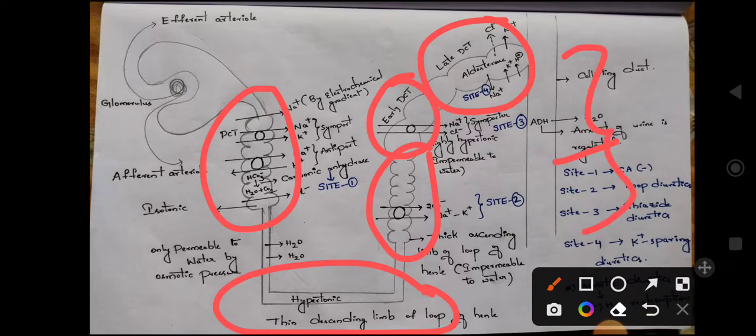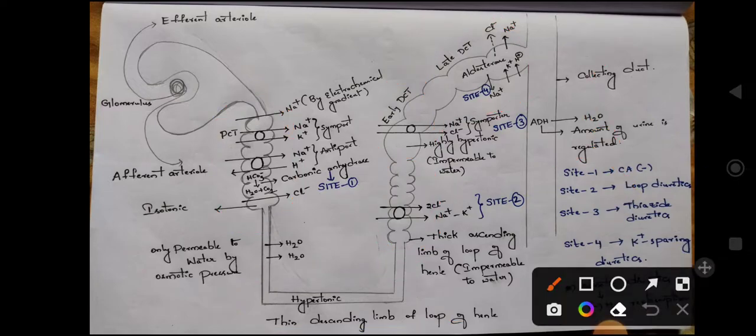To understand the anatomy of the nephron, we should know what is a symport, what is an antiport, and what is an electrochemical gradient. We should have some basic knowledge regarding these concepts. Then we can understand the pharmacological actions of diuretics starting from stage one, glomerular filtration.